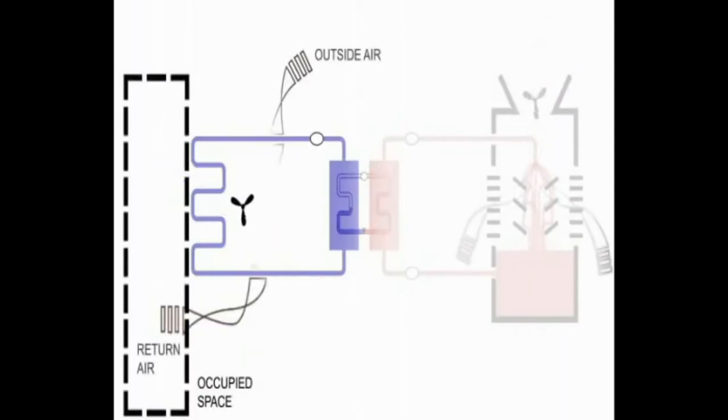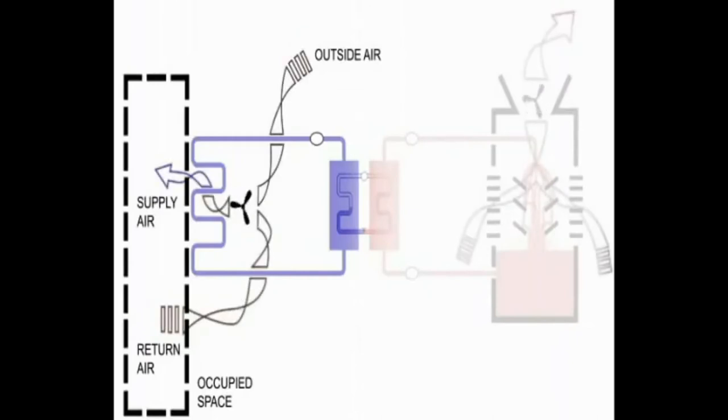Outside air is introduced into the air loop, and that outside air combines with recirculated air from the room before both volumes of air move across the filter.